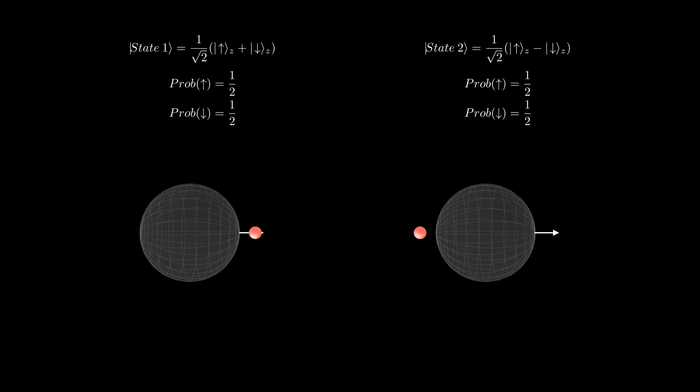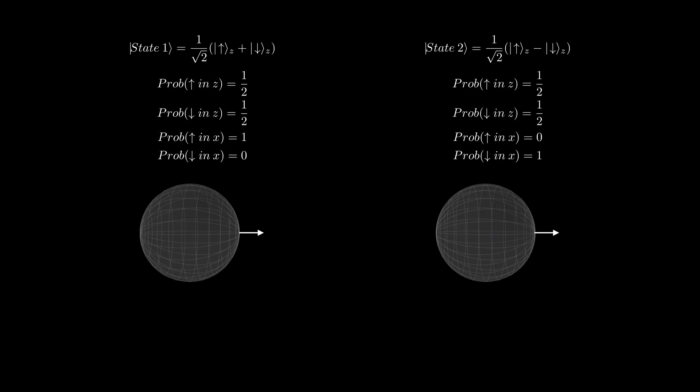In particular, what we see is that the plus state will deflect to the right 100% of the time, and the minus state will deflect to the left 100% of the time. So it turns out that up Z plus down Z is the same state as up X.